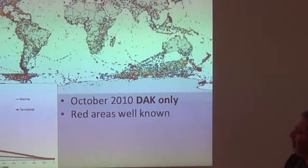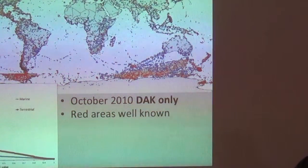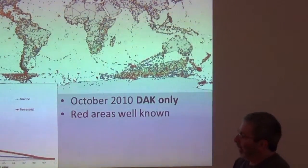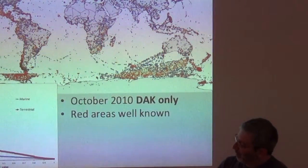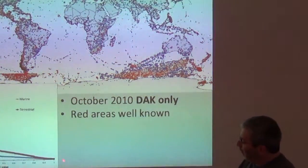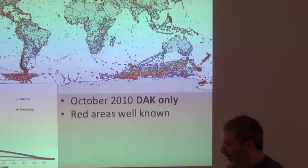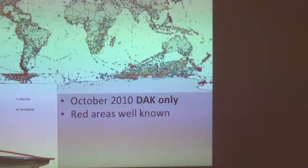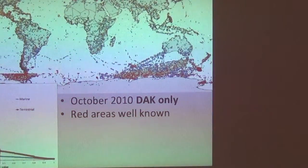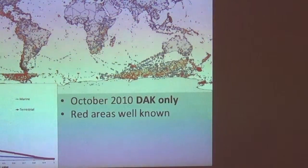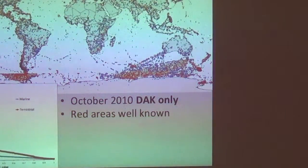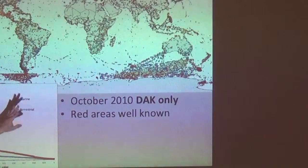We can look at this global view for terrestrial and marine areas. This is a frequency plot going from zero knowledge to very well known, and what I want you to see is that very few pixels on earth are very well known at the spatial resolution of 100 by 100 kilometers. Most pixels fall into the zero category — and again, that's as of October 2010; there have been some changes.